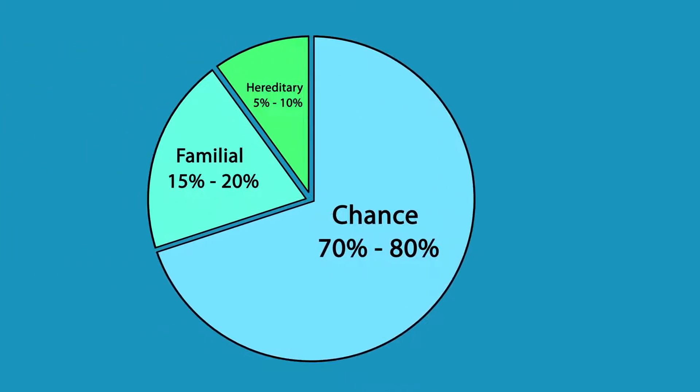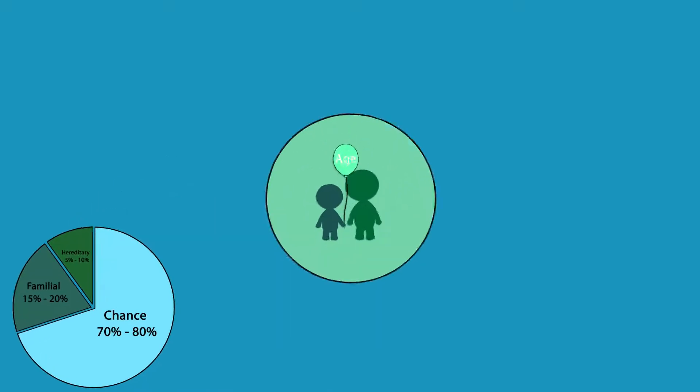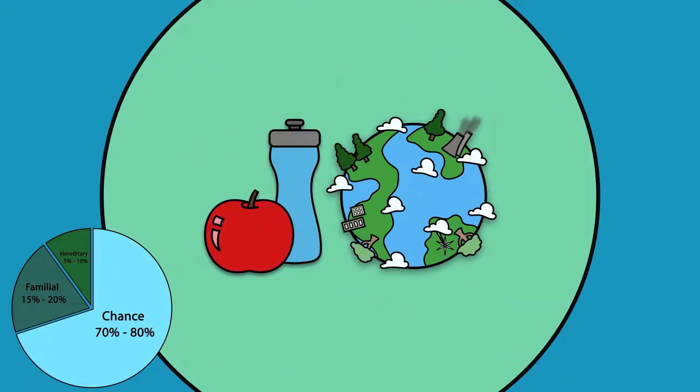70 to 80% of cancers happen by chance. These cancers are caused by things like age, lifestyle, and environment, and are called sporadic cancer.